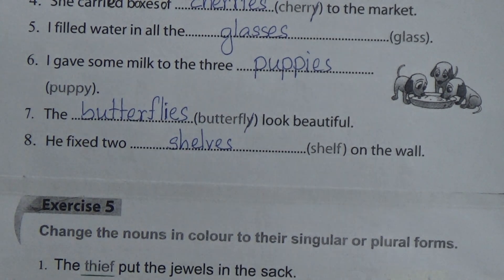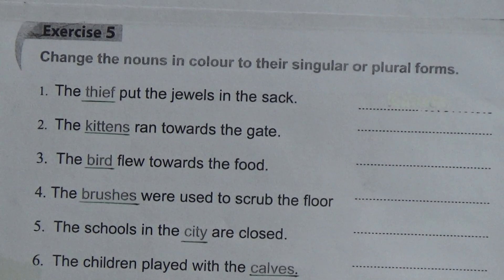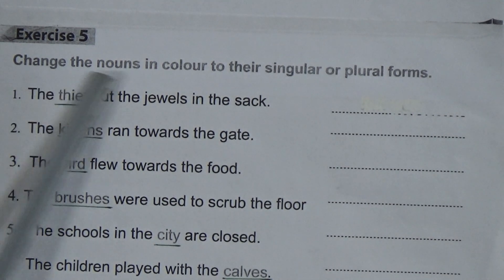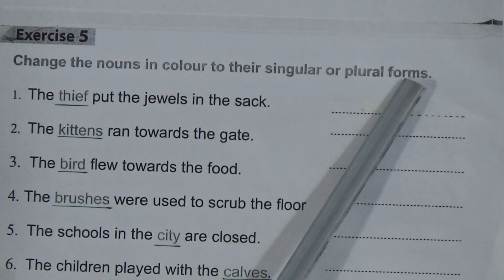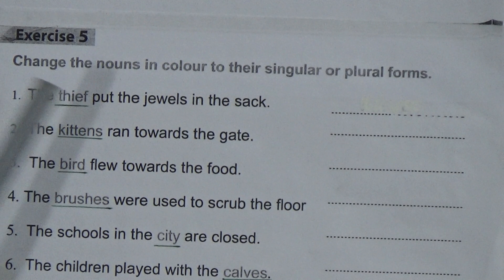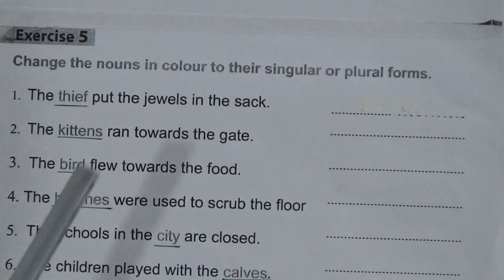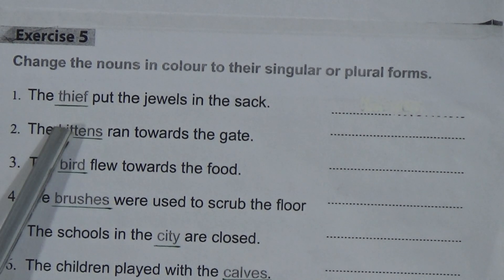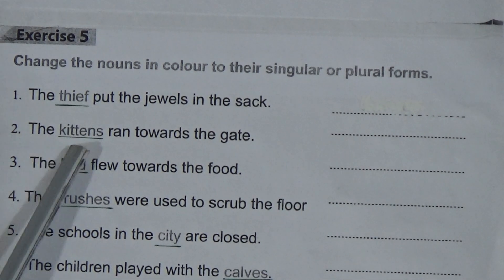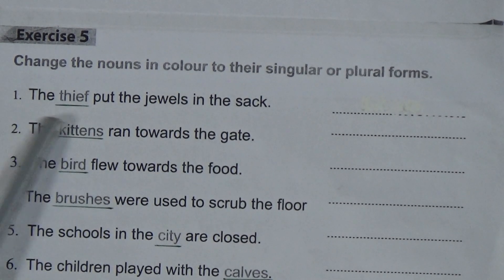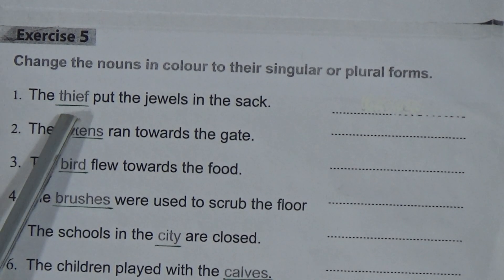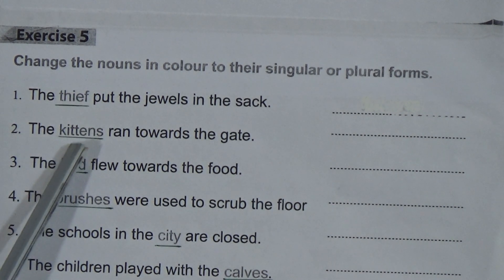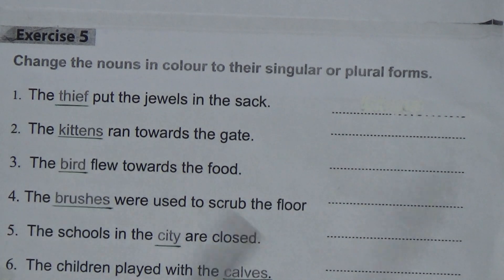Now we will go to Exercise number 5 on page number nine. Exercise 5 says: change the nouns in colour to their singular or plural forms. In your book they are in pink colour. If the word is in singular form, we will change it to plural; if it is in plural form, we will change it to singular.